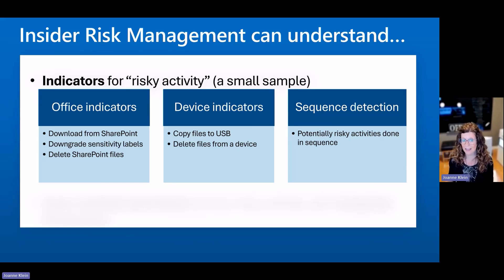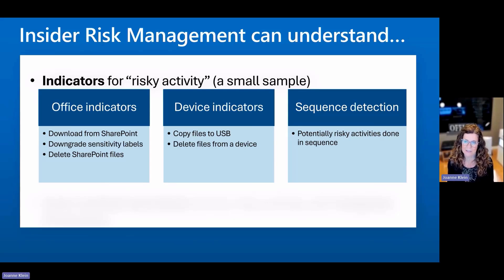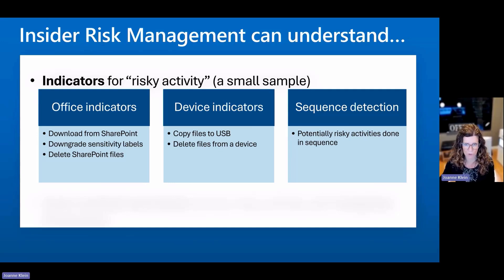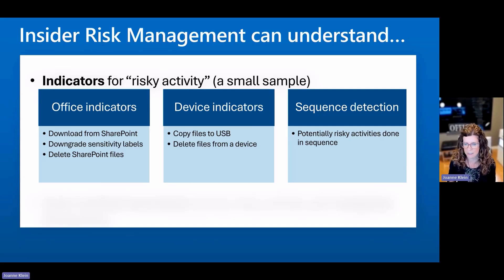It can even understand things done at the device level — copying files to a USB drive, printing files. And it not only understands activities in isolation, but also when they're sequenced together and the potential risk of that. An example would be downgrading sensitivity labels on some files sitting in SharePoint, then downloading them to your device, then copying them to USB, and then going back to SharePoint and deleting them after. That sequence of events tells a very different story than if you were to look at each activity in isolation.